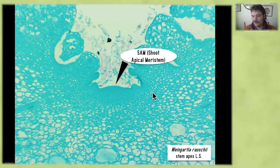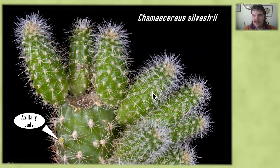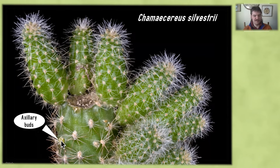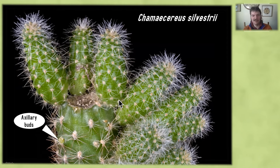If something happens to that shoot apical meristem, there are little versions of it in all the axillary buds — little areas of meristematic tissue down the sides of the stem. So you can see here on this plant, we've cut off the top and it no longer has a shoot apical meristem, so it's branching from all the side buds, giving us a bunch of shoot apical meristems on each of these branches.